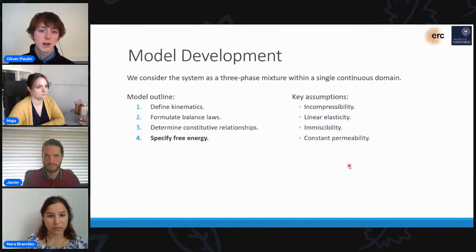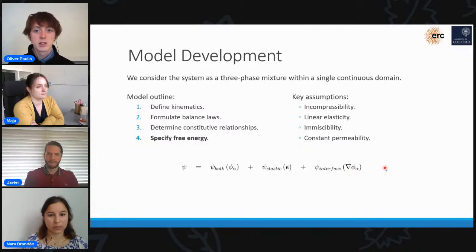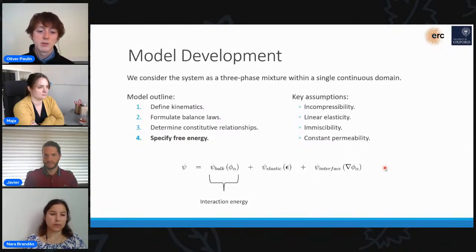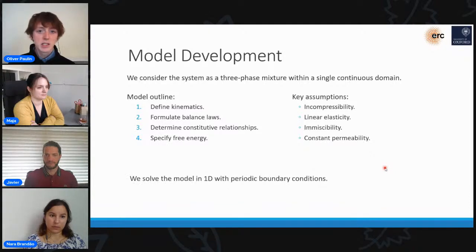Finally, to complete our model, we need to specify free energy for our system. This is what determines the specific form of the capillary potential and the Korteweg stress that I mentioned before. So we assume that our free energy is just an additive function of the energy of all the different energetic processes that are going on in the system. So we have an interaction energy, which is due to the interactions of all the different phases with each other, so the interaction of the liquid with the gas and the gas with the solid, for example. And this just depends on the relative volume fractions of each phase. We also have an elastic energy, which just depends on the strain of the solid skeleton, and an interfacial energy, which depends on gradients in the volume fractions.